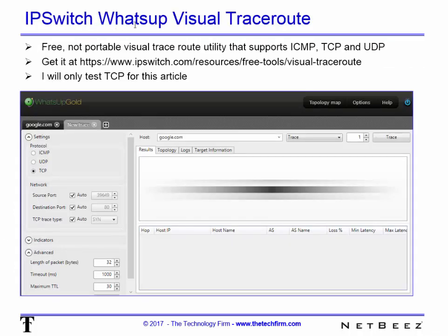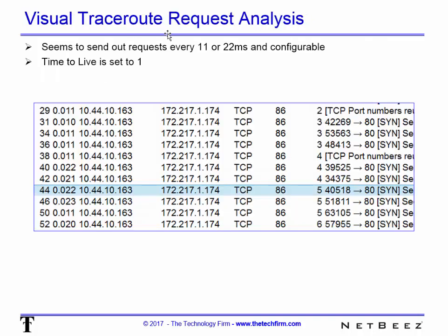Next one: IP Switch Visual Trace Route. It's free, but it's not portable — you have to actually install it. It supports TCP as well as UDP as well as ICMP. That's a neat exercise because in some places you can use different protocols to see if you get different routes when you change the protocol or port number. There's the URL where you can get it. I only tested TCP for this article. For the request analysis, it tends to stagger requests at 11 and 22 milliseconds, and the time to live obviously starts at 1 as well.